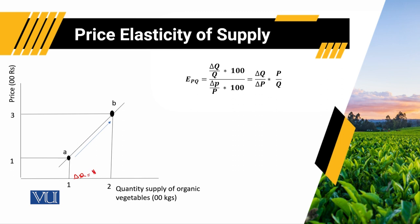Quantity supply at point B is equal to 2 while quantity supply at point A is equal to 1. So change in quantity between these two points is equal to 1. Similarly, if we move from point A to point B, change in price is equal to 2.